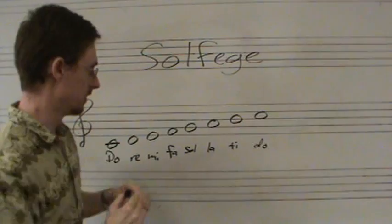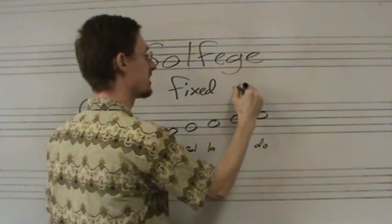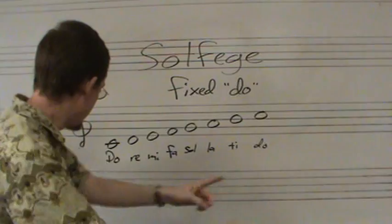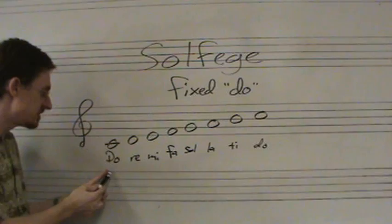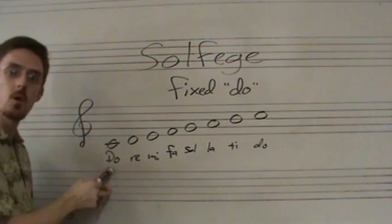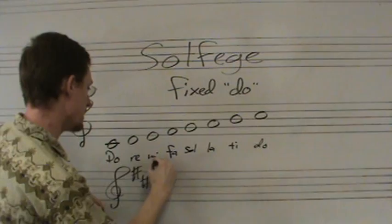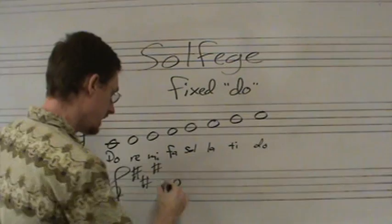There are two ways solfege may be performed, or two ideals. One is called fixed, or fixed doe. Fixed doe solfege means that doe — in this case, we are in treble clef in the key of C major — that C is doe. Just like the note name C is always C regardless of what key you're in, in fixed doe solfege, doe will always be C regardless of the key being performed. So for instance, if I were in the key of A major with three sharps and put in a C — in this case actually a C-sharp — it would still be doe.